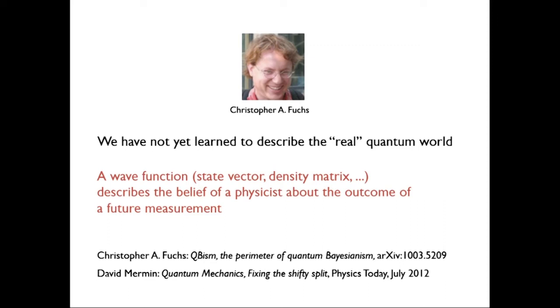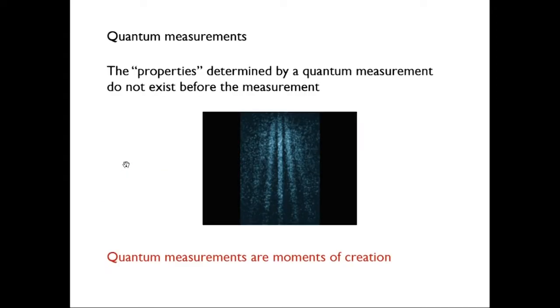In essence, what Fuchs says is that we have not yet learned to describe the real quantum world, and wave function or any other formalism only describes the belief of a physicist about the outcome of a future measurement. If one takes this attitude, many puzzles and paradoxes of quantum physics go away, such as the collapse of the wave function, spooky action at a distance, and one could go on. I think it's certainly an interesting point of view to look at, and I think at the heart of this view is the statement that properties determined by a quantum measurement do not exist before the measurement. Quantum measurements are moments of creation.